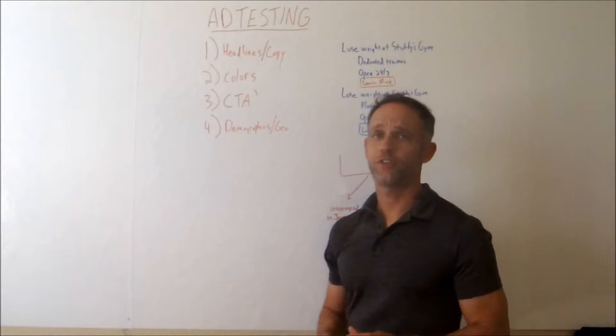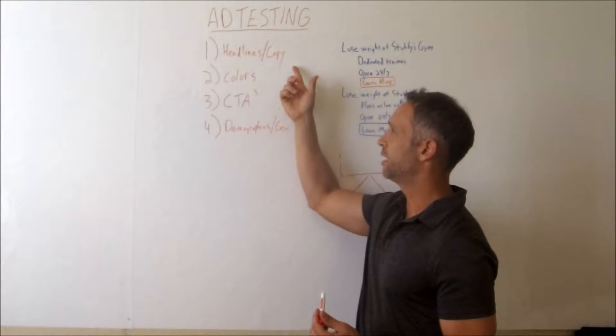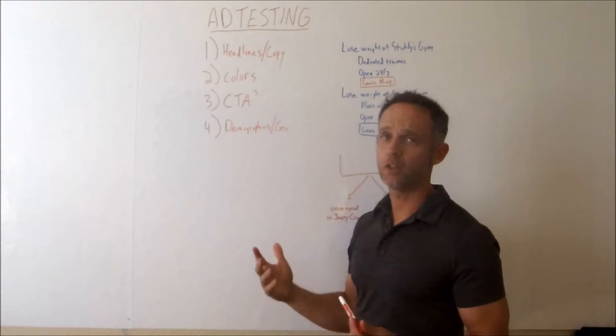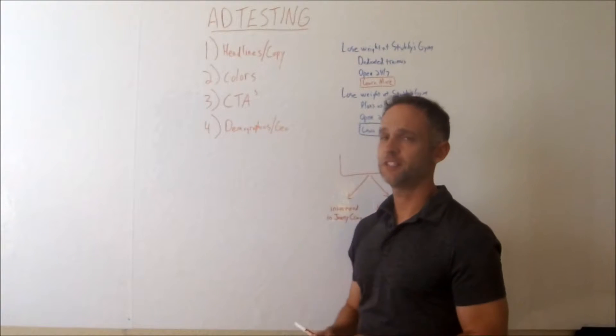So I've written down the top four things you can A-B test on your own. Headline and ad copy, different colors, call to actions, also called CTAs, and then demographics, even geographic.